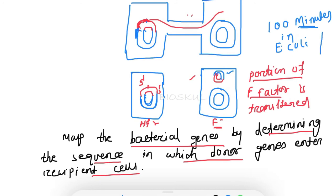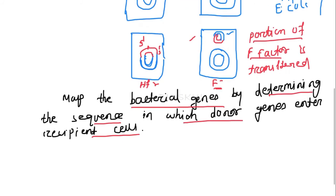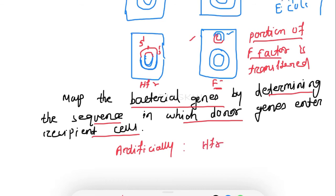This interrupted mating can also be done artificially. To do it artificially, first mix the HFR strain with the F-minus strain, then interrupt the conjugation.